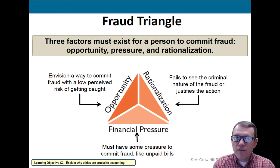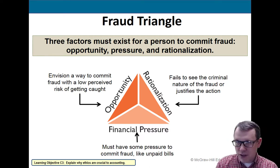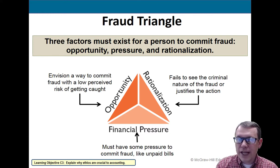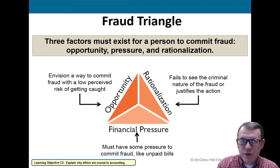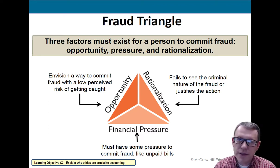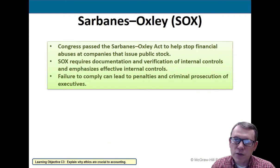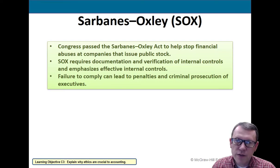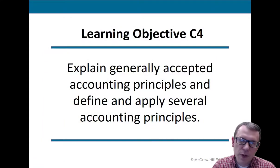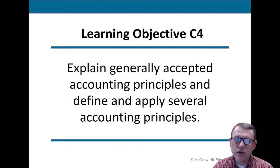Bonding basically means the organization goes to a bonding agency and buys an insurance policy for a person who could hurt them financially because they have control over finances or assets. The more financial pressure you have — the more debt, the more you're defaulting or bankrupt — the more expensive it is to bond that person. There are also laws created around accounting ethics: Sarbanes-Oxley (SOX) and Dodd-Frank, both designed to ensure financial professionals are not hurting consumers.